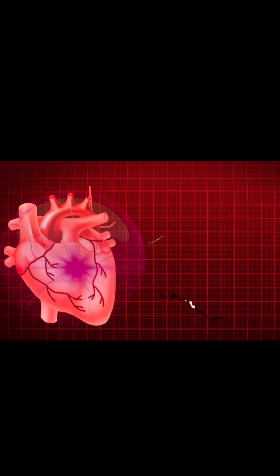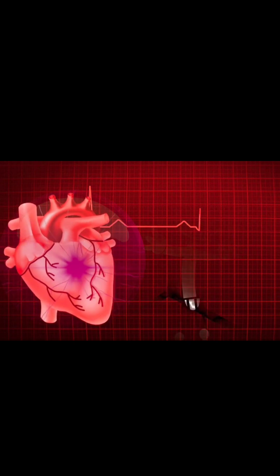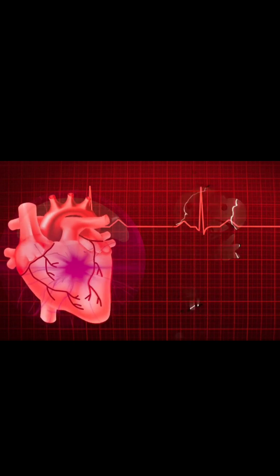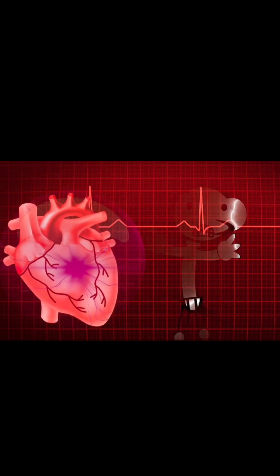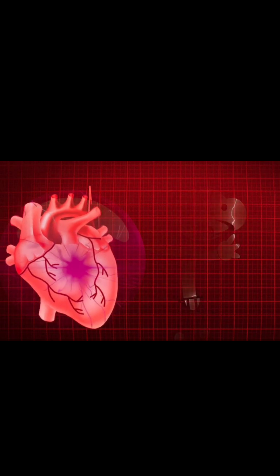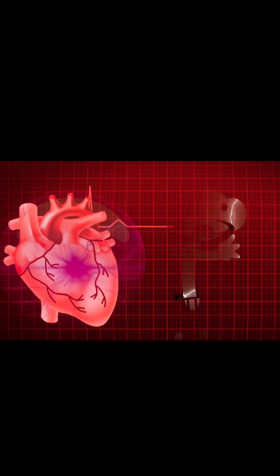Area supplied by the RCA: right atrium, right ventricle, part of the left ventricle (posterior), the SA node in 60% of people, and the AV node in 80% of people.